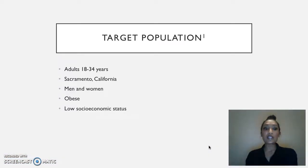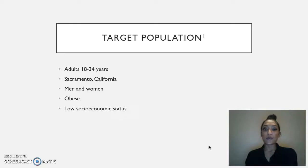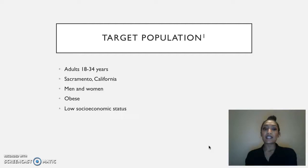For this community needs assessment, my chosen target population includes adults who are 18 to 34 years living in Sacramento, California. It includes both men and women who are struggling with obesity and are of low socioeconomic status. I decided to choose this group because Sacramento has a ways to go as far as its obesity rate and income level.